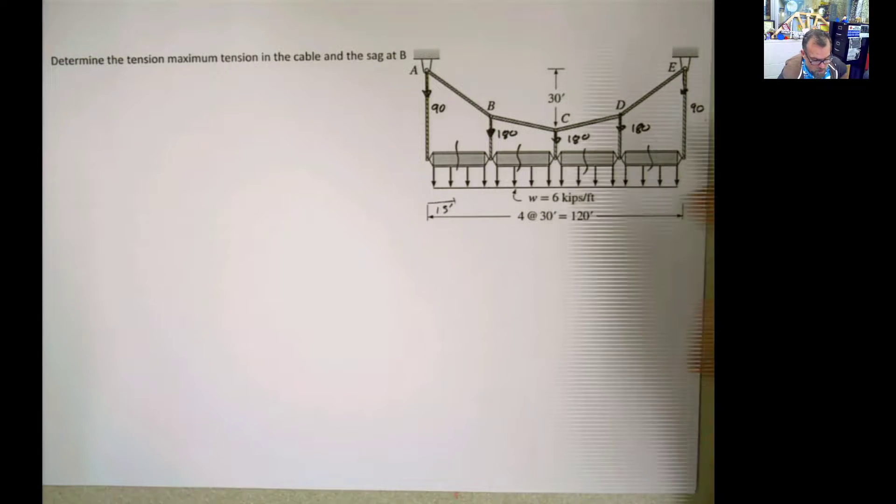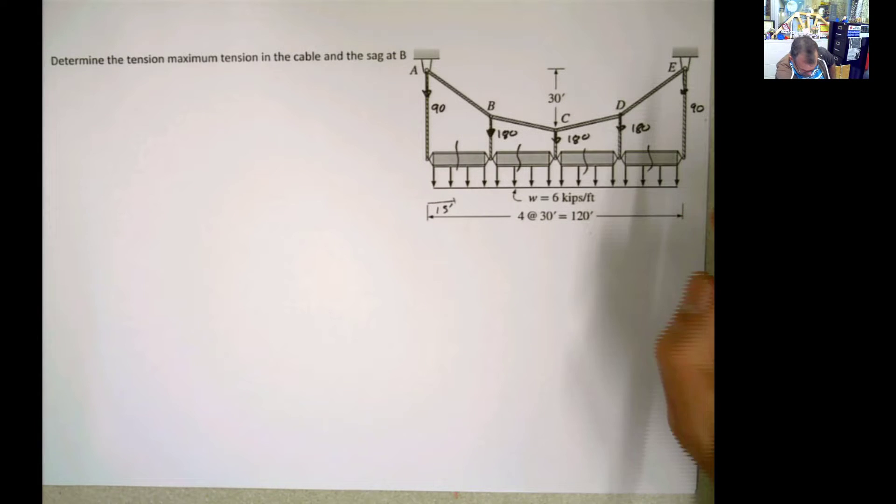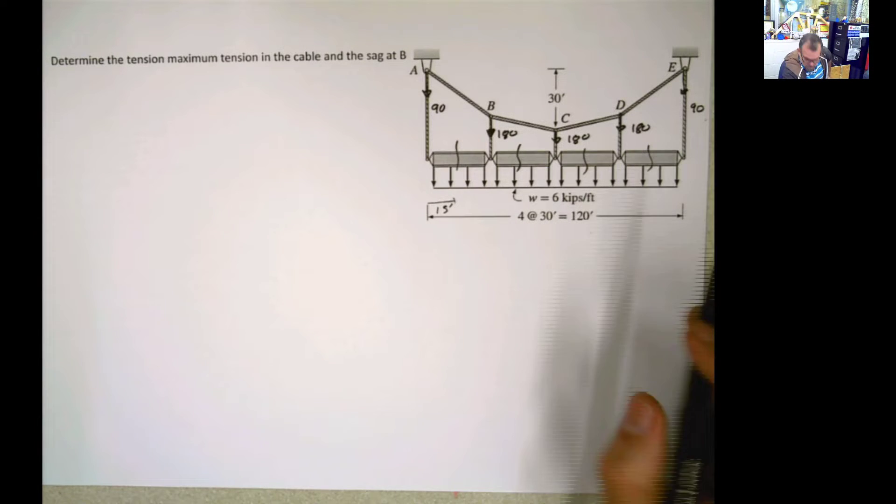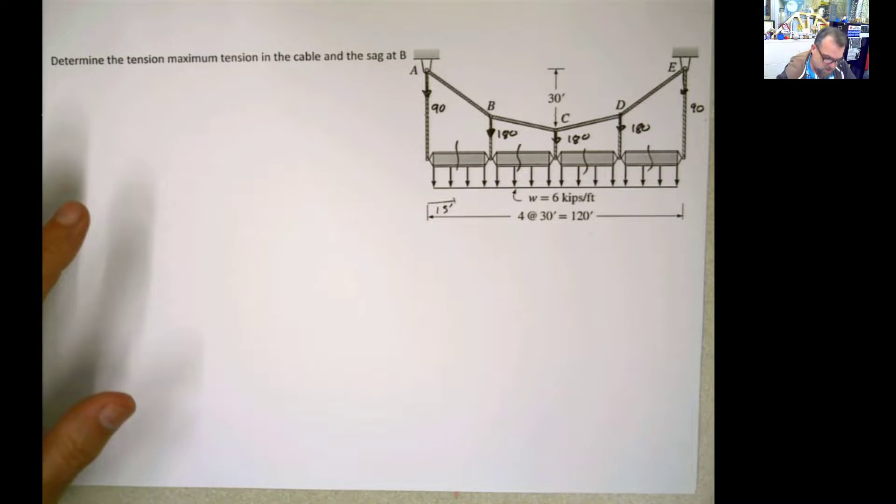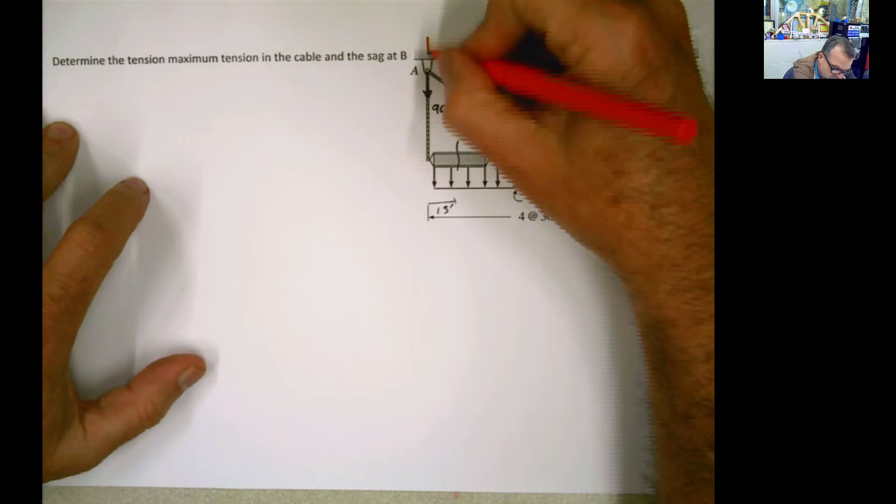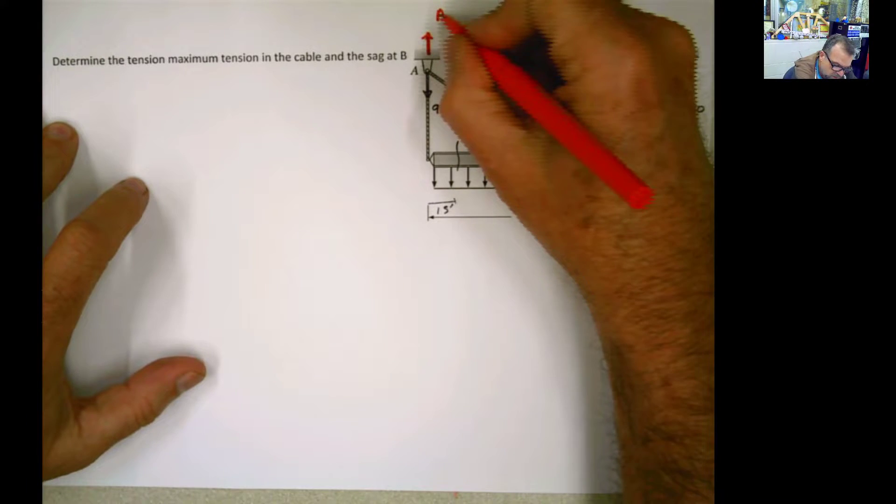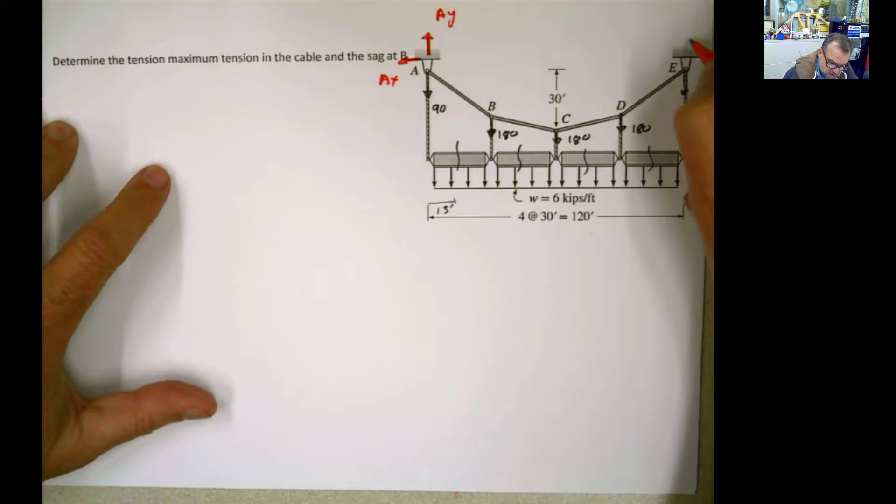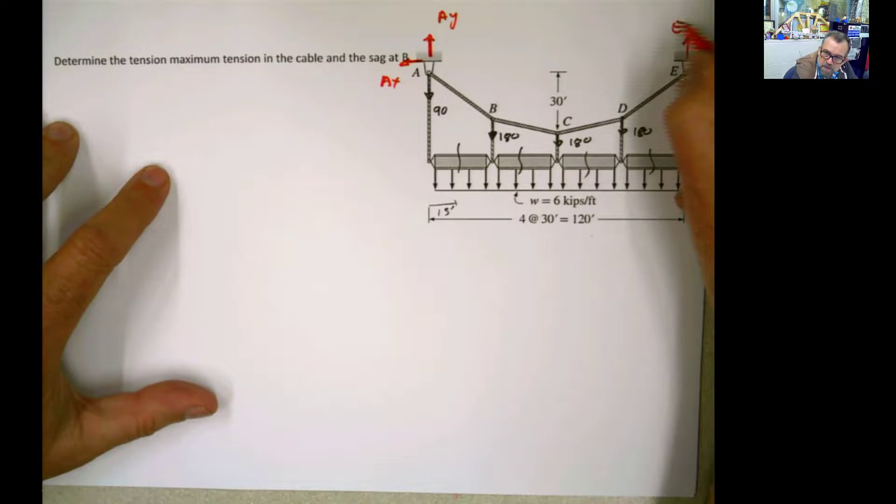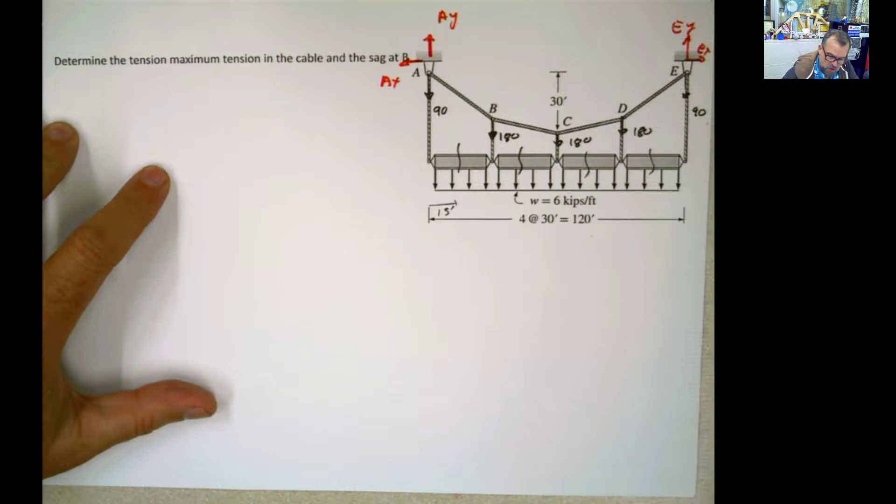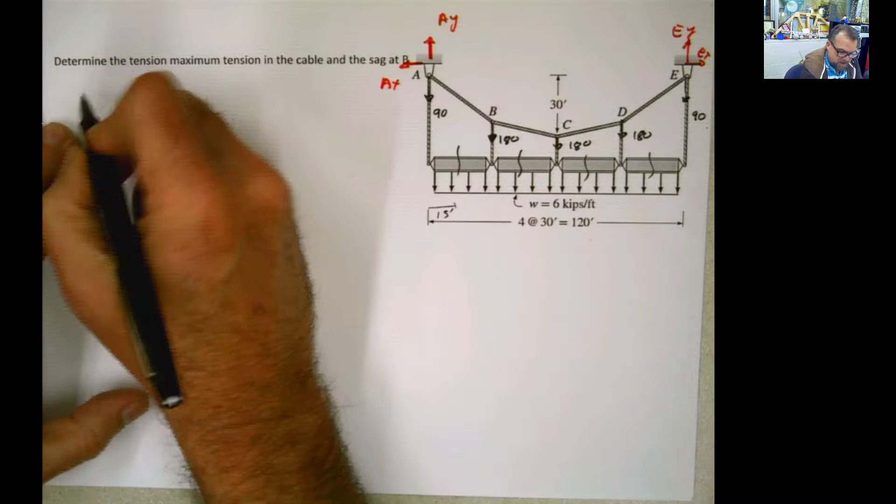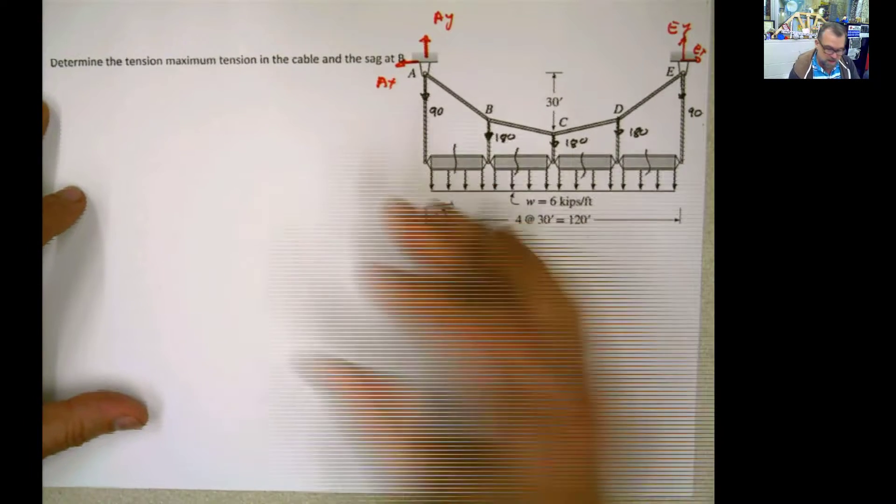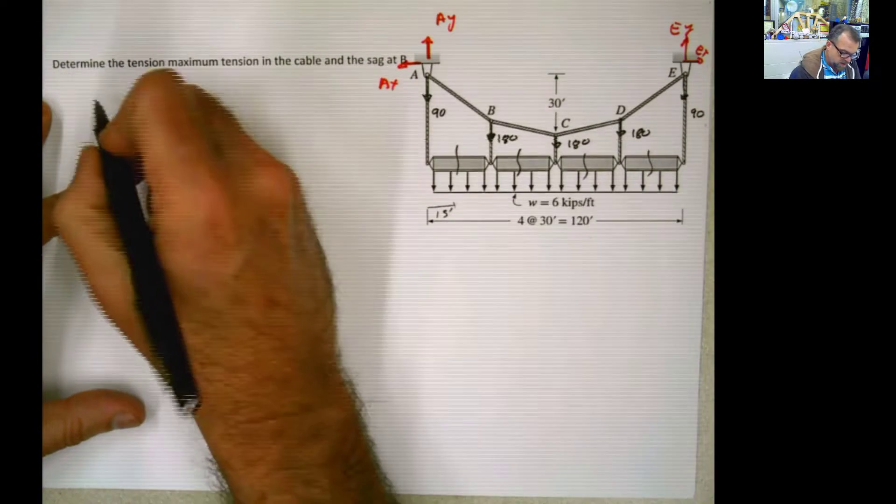Now, what is the next step? Well, the next step is calculating the reactions. And you know this is going to be a support here. It's going to have a reaction Ay and a reaction Ax, as well as Ey and Ex. How do we do that?